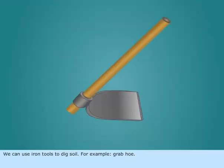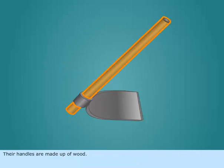We can use iron tools to dig soil. For example, grab hoe. Their handles are made up of wood.